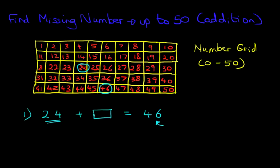So starting at 24, count with me: 1, 2, 3, 4, 5, 6, 7, 8, 9, 10, 11, 12. Let's keep going: 13, 14, 15, 16, 17, 18, 19, 20, 21, and 22. It is 22. Let's write this down. So 24 plus 22 equals 46.